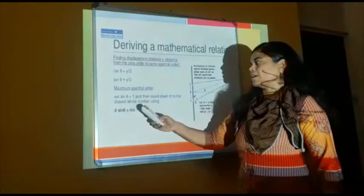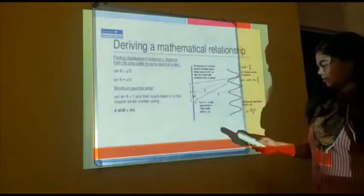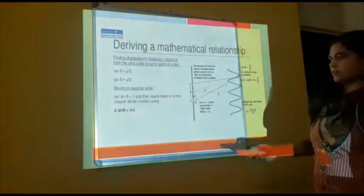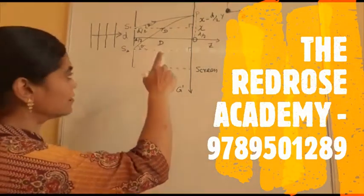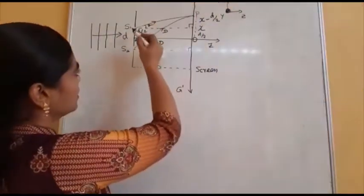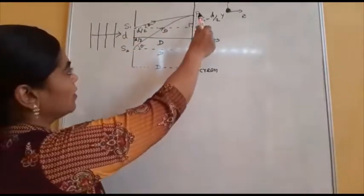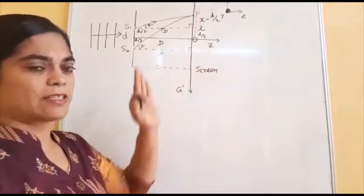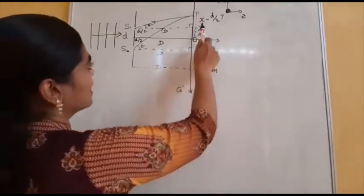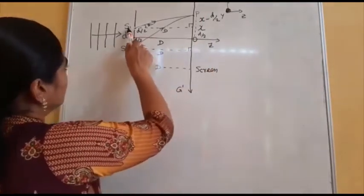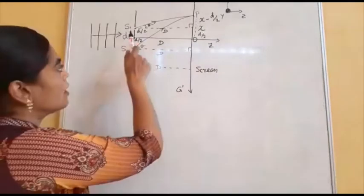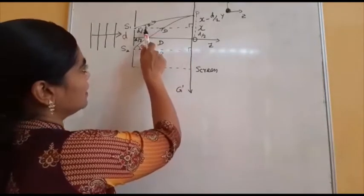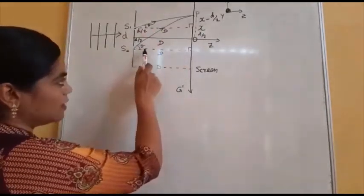D sin theta is now replaced by M·lambda or N·lambda, where M may be 0, 1, 2, 3, 4, etc. We will derive the path difference between the light from the two slits S1 and S2. We consider any arbitrary point P of maximum intensity. The distance between S1 and S2 is d, so half of it is d/2. From the S1 slit it makes an angle theta to P, and from the S2 slit it also makes an angle theta to P.